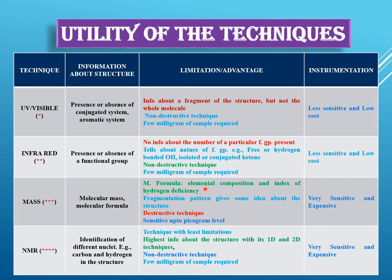Mass spectrometry gives you the molecular mass and the molecular formula. The molecular mass tells you the mass of the compound, and the molecular formula gives you the elemental composition — which elements are present. From the molecular formula you can calculate the index of hydrogen deficiency, also called the double bond equivalent, which shows how much unsaturation is present in the molecule. The fragmentation pattern obtained in electron impact mass spectrometry may give you some idea about the structural fragments present in the molecule.